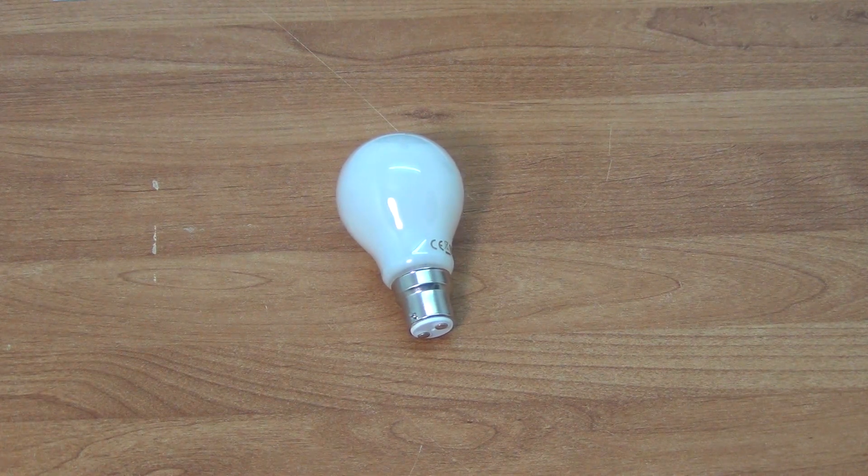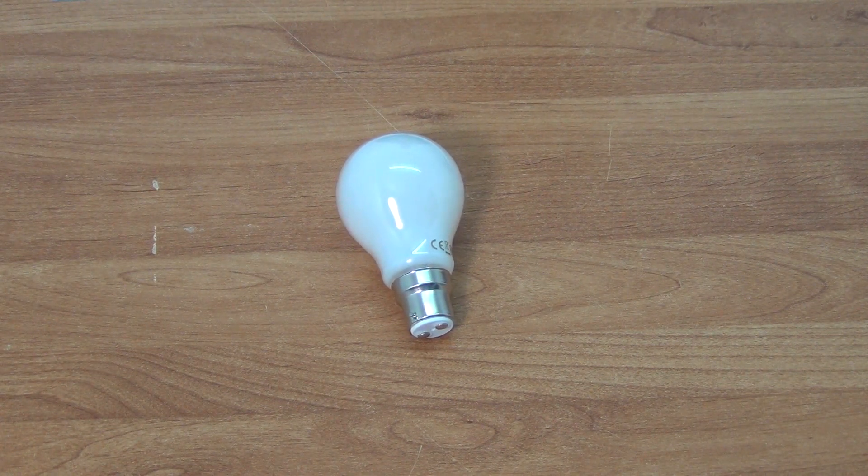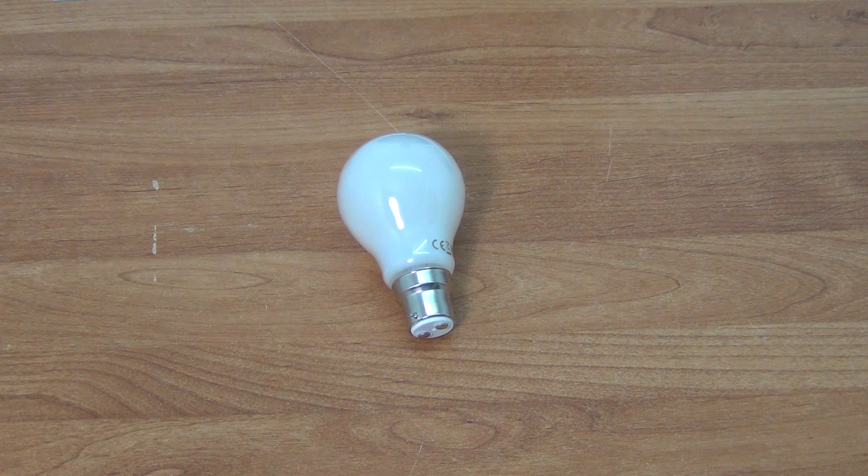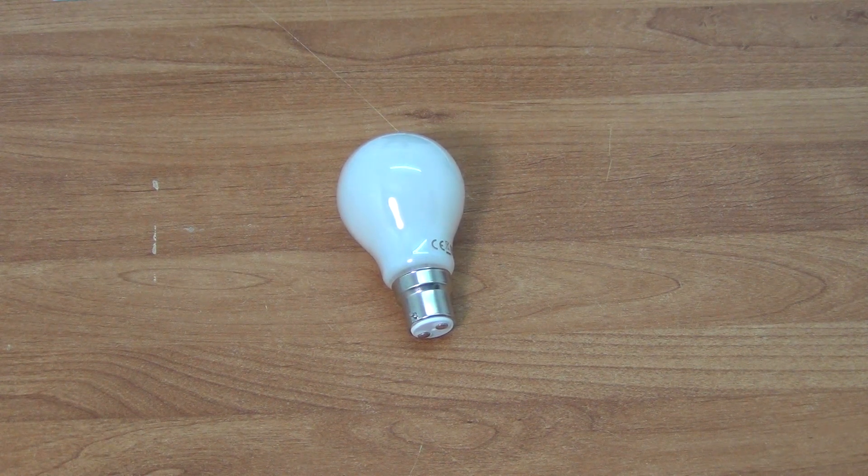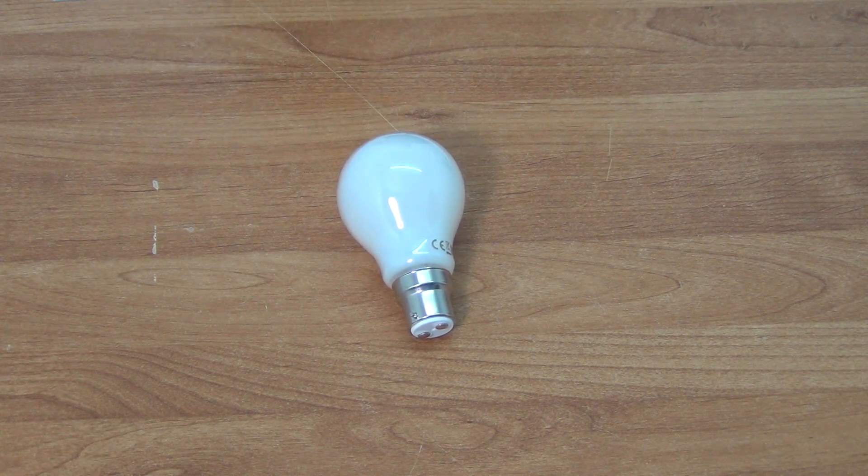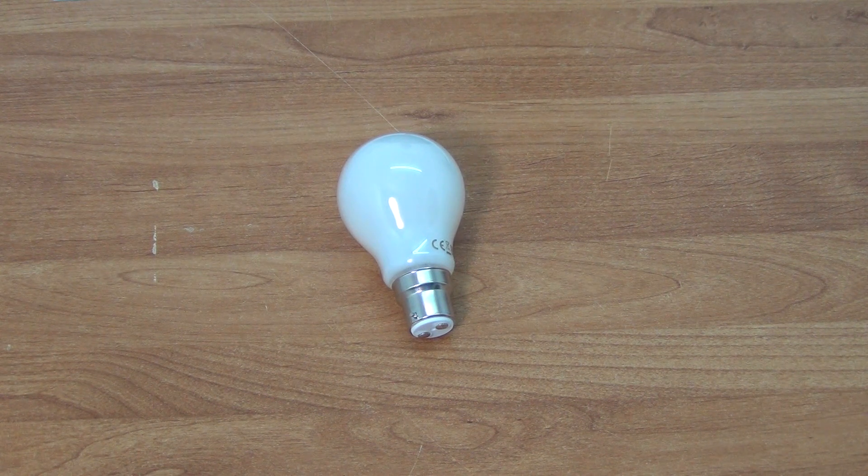Now the light dispersal from this type of bulb is absolutely excellent. You get about 320 degree dispersal, where some other bulbs you get much smaller than that. In terms of the energy rating, it's an A++ so it's extremely high energy rating.